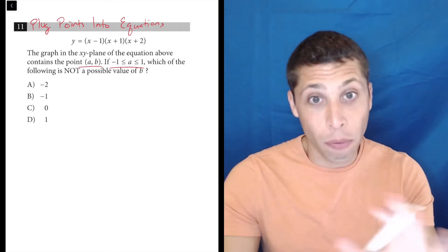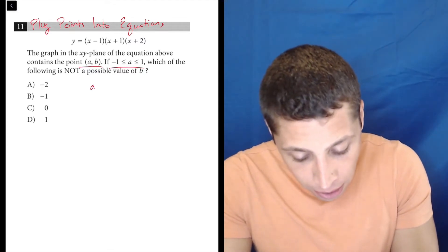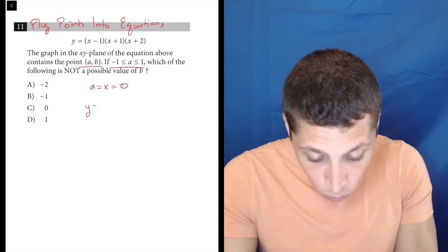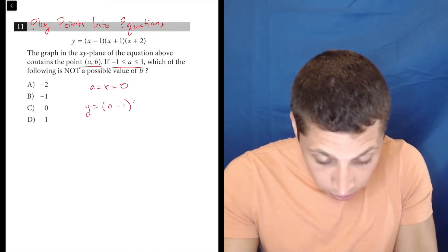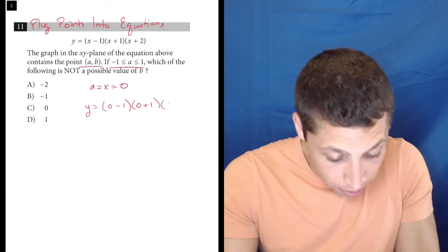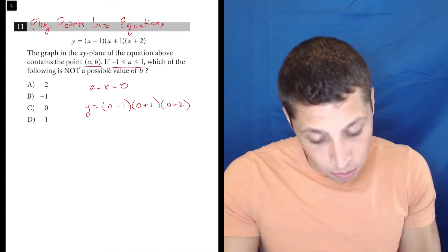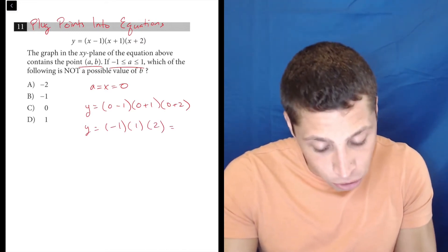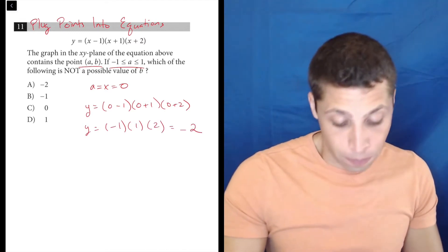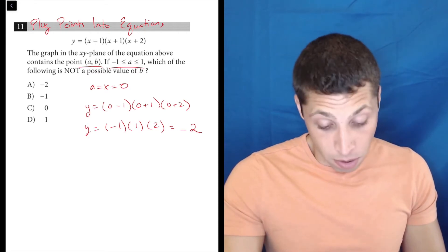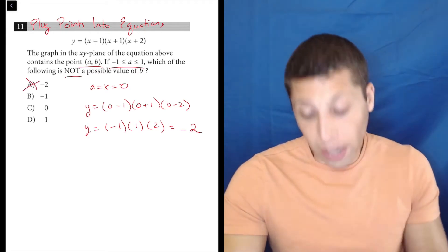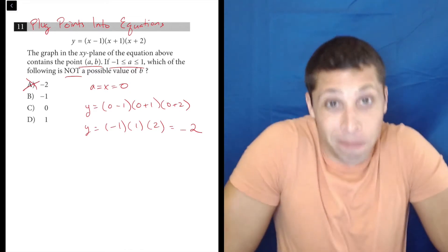What would happen if a or x were equal to 0? Well, then y would be 0 minus 1 times 0 plus 1 times 0 plus 2, right? So y would be negative 1 times positive 1 times positive 2, which is negative 2. Okay, well, they want something that's not a possible value of b. Well, we just proved a is wrong, right? We just found that possible value. So that's pretty good.